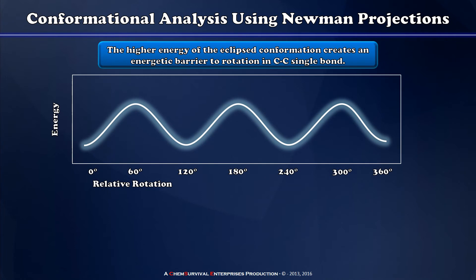This diagram relates the relative energy or free energy of a rotomeric state as a function of the relative degree of rotation along the carbon-carbon bond. What's trying to be shown here is the following.